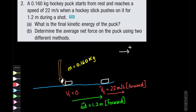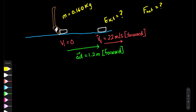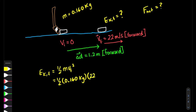To calculate the final kinetic energy of the puck, we use the formula: EK final equals one-half times m times v-final squared. The mass and speed are both in the correct units. Just be careful with the square for the speed — make sure you put it into your calculator. We get approximately 38.72 joules. That was part A.